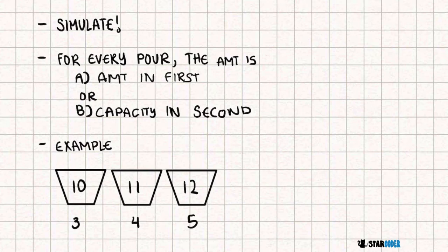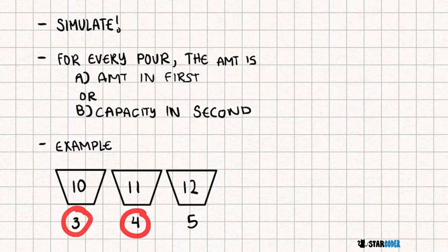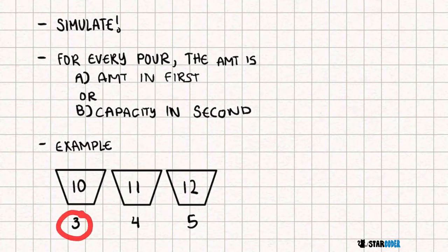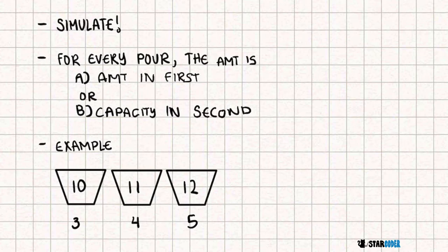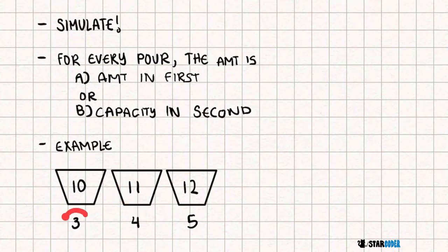In order to solve this question, we're going to simulate the 100 pours. For every pour we do, the amount is either the current amount in the first bucket we're pouring from, or the amount of capacity left in the second bucket. So if we were pouring from bucket one to bucket two, we look at two numbers: the amount of milk currently in bucket one, and the amount of capacity left in bucket two. Whichever is smaller is the amount we transfer. If there's more milk than capacity, we only give the amount of the capacity. If there is less milk than capacity, we just give the amount of milk.